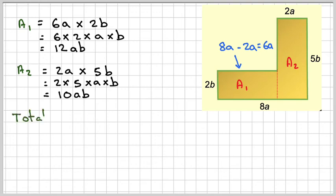So adding A1 and A2 together, again, we're just going to get 22ab. So either way you put this line, you should get the same answer.